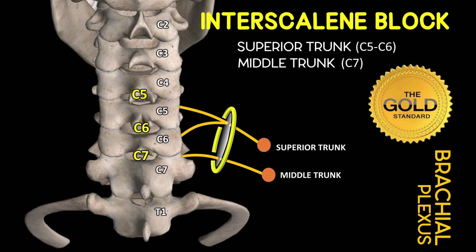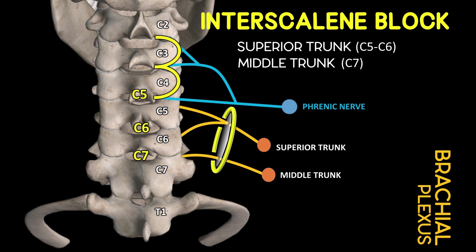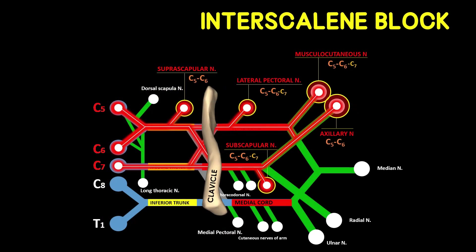The interscalene block continues to be the established regional gold standard for shoulder surgery. While studies suggest a 100% rate of phrenic nerve block with elevated volumes, in reality only a limited number of patients encounter symptoms indicative of phrenic paralysis. Confronted with this undesirable outcome, it is advisable for patients with respiratory issues to contemplate the adoption of an alternative analgesic approach.